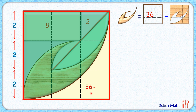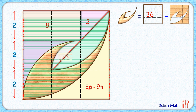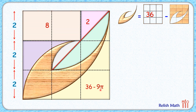From 36 we subtract the area of this quadrant, which is one-quarter times π r squared. Solving it, this gives 36 divided by 4, which is 9π. So that is the area of this yellow region.